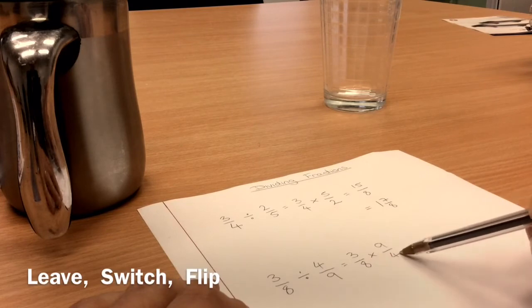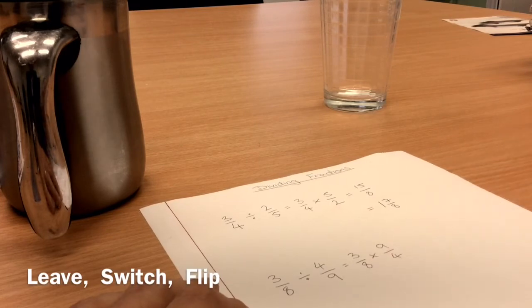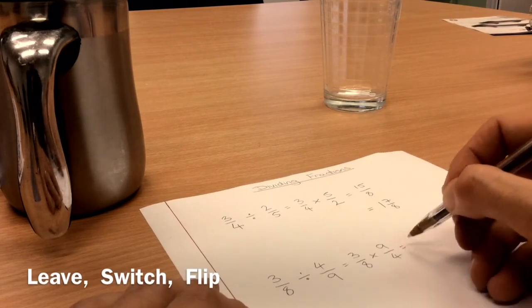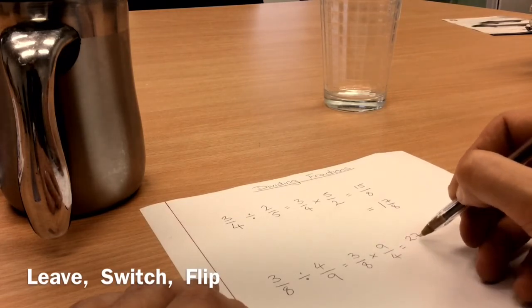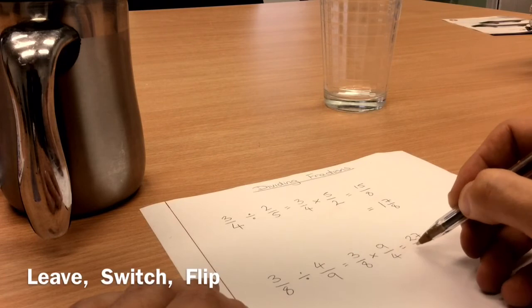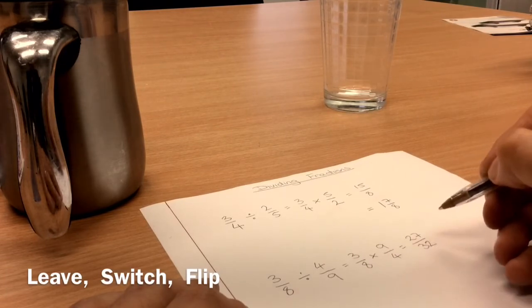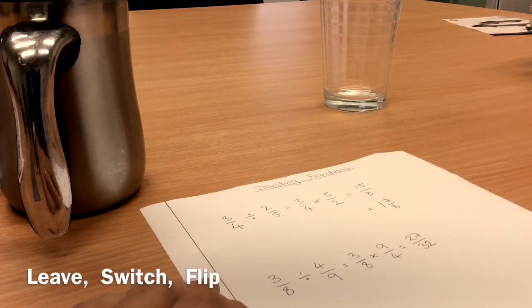Leave, switch, flip. Now I've just got some fractions multiplied together, and I can do that. Three times nine is twenty-seven. Four times eight is thirty-two. Can we simplify that? No, we can't.